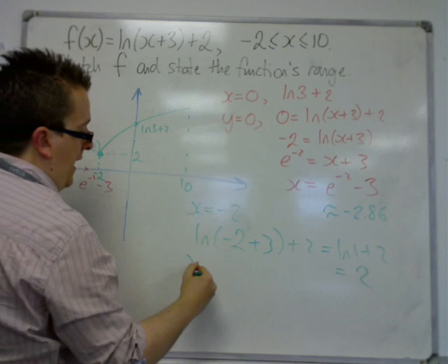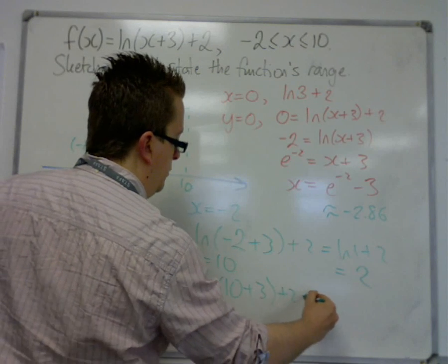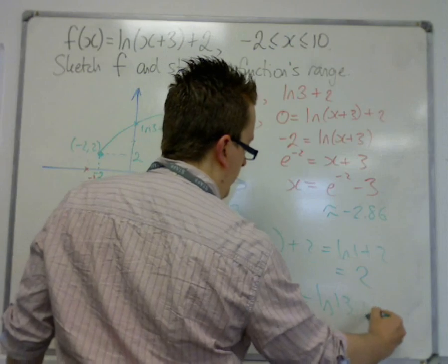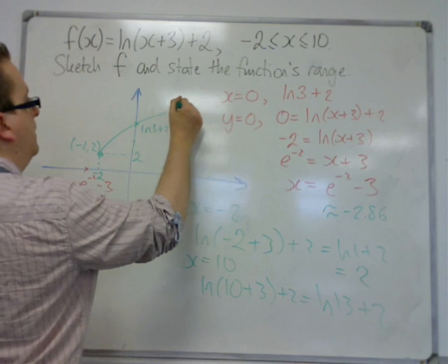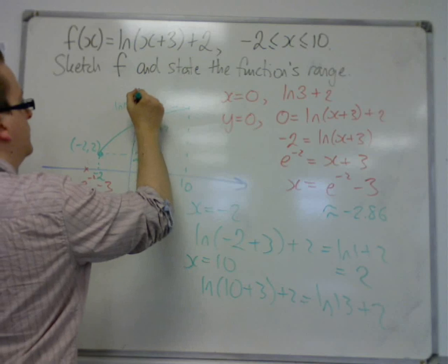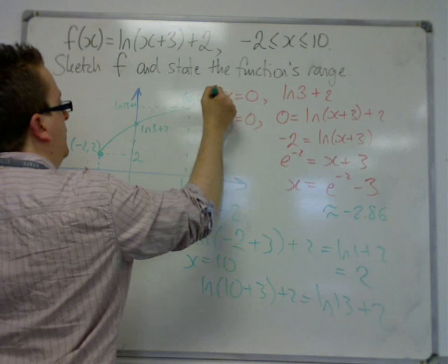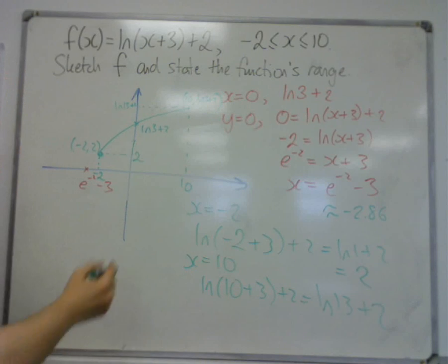So when x is 10, we get log of 10 plus 3 plus 2. So log of 13 plus 2. So this has the coordinates 10, log 13 plus 2 for that point.